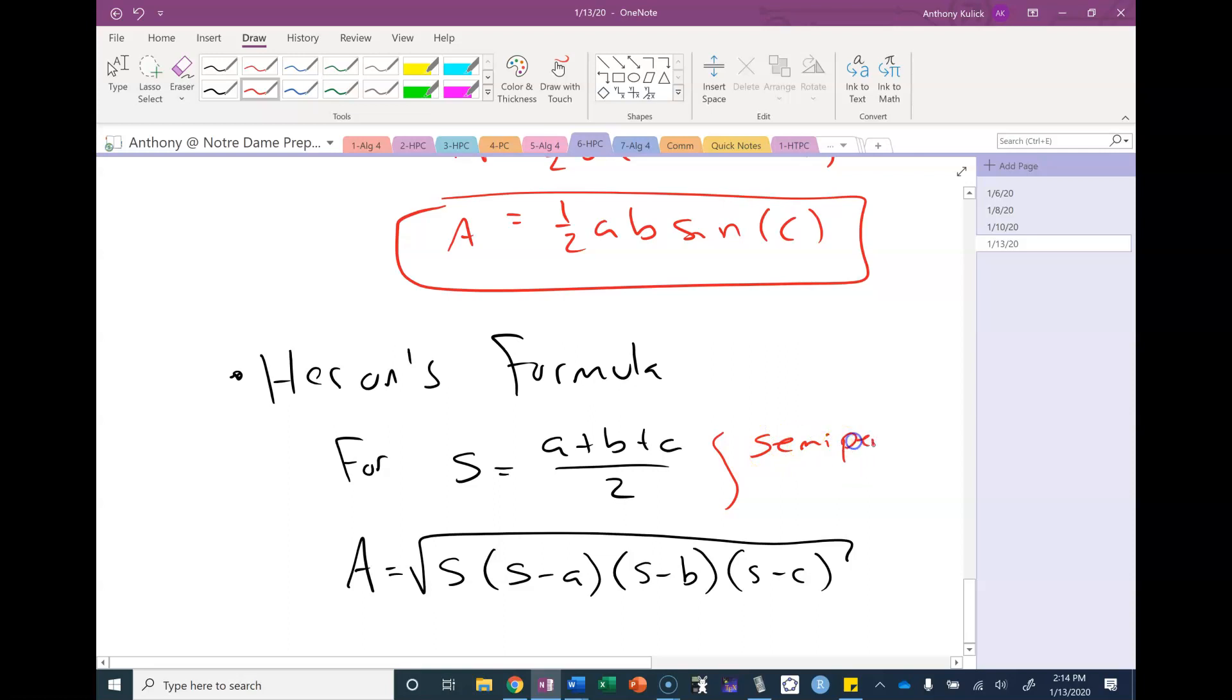This formula says for S equal A plus B plus C over 2, the area is the square root of S times S minus A times S minus B times S minus C all square rooted. We call A plus B plus C over 2 the semi-perimeter.